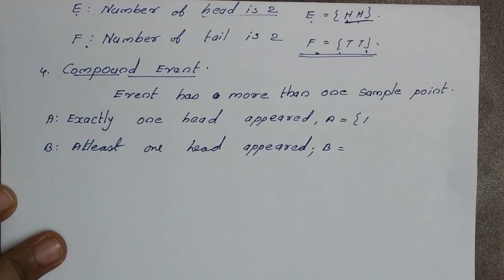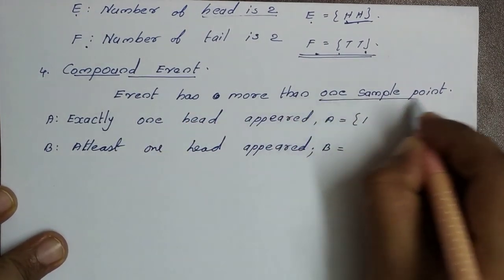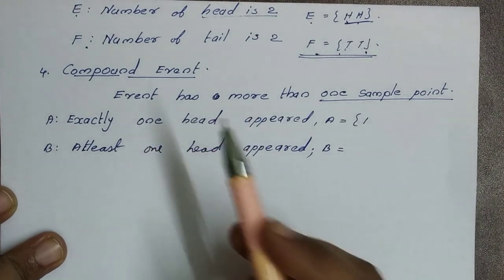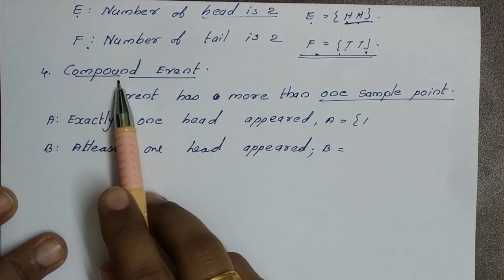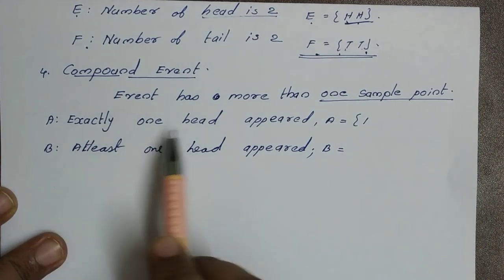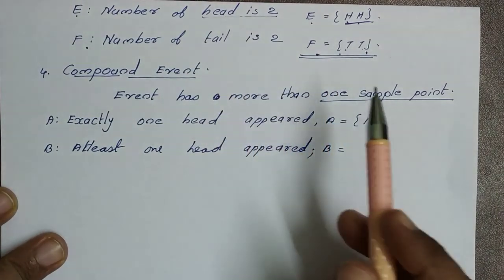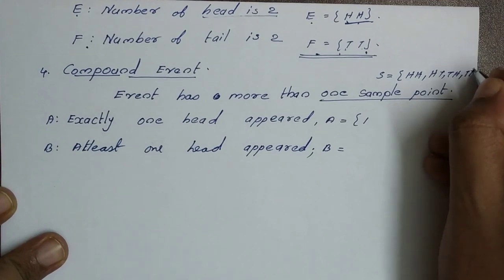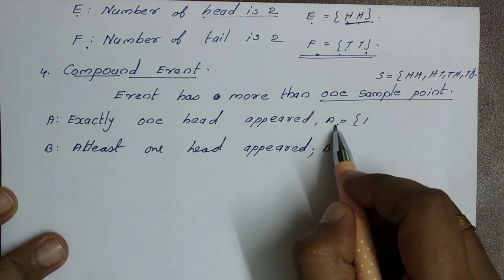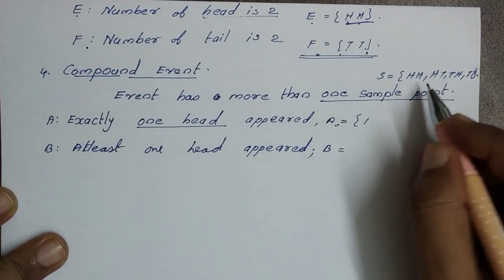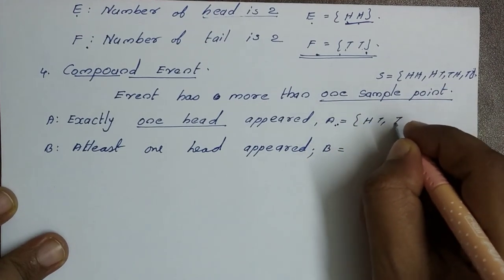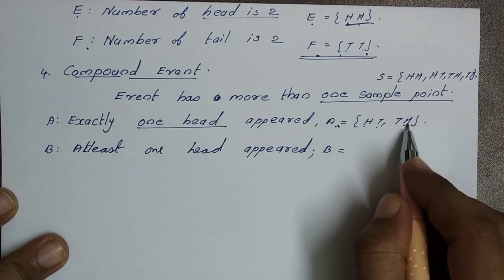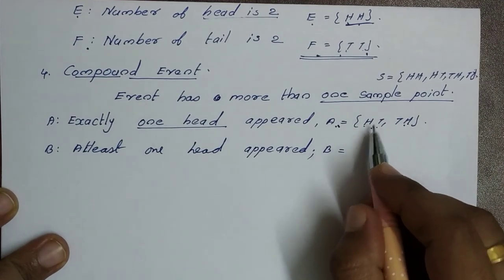The next type of event is a compound event. A compound event has more than one sample point. For example, tossing two coins — the sample space is {HH, HT, TH, TT}. Event A: exactly one head appears. That gives us {HT, TH} — two sample points. Since we have more than one sample point, this type of event is a compound event.